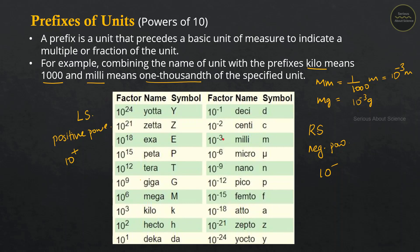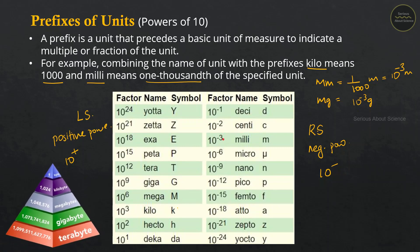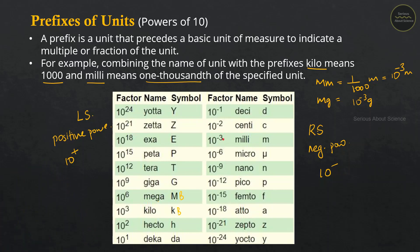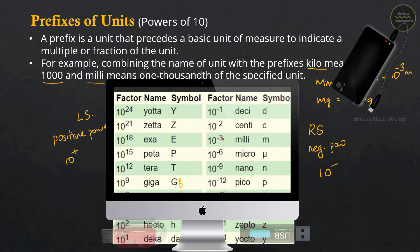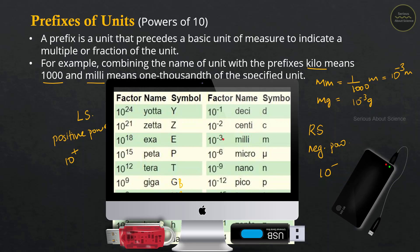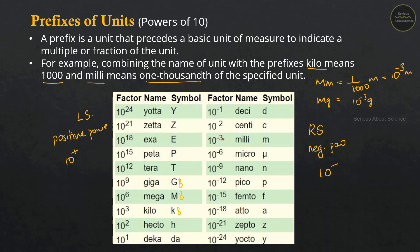Kilo, mega, and giga are prefixes we encounter in everyday life. For example, kilobyte, megabyte — megabyte is 10 raised to 6 bytes — and gigabyte is 10 raised to 9 bytes. In a hard drive, 1000 GB is 1 TB, and 1000 TB is 1 petabyte.